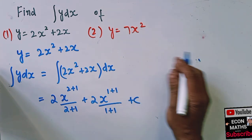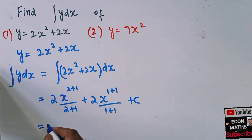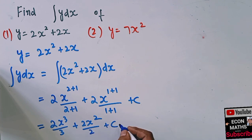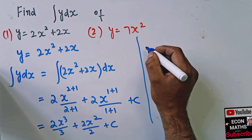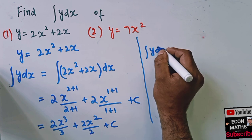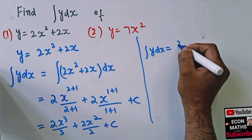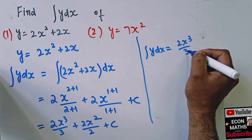So we will get 2x cubed upon 3 plus 2x squared divided by 2 plus the constant of integration. That means the integral of y dx came out to be 2x cubed upon 3 plus 2 and 2 gets cancelled, we are left with x squared plus the constant of integration.